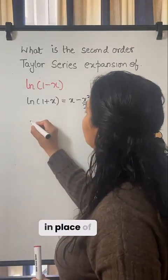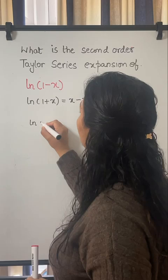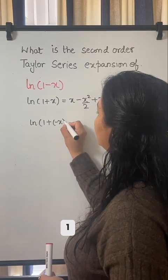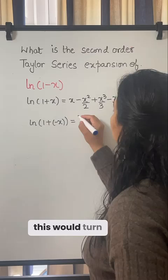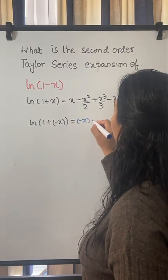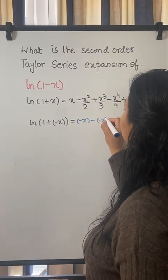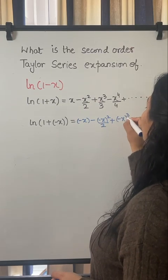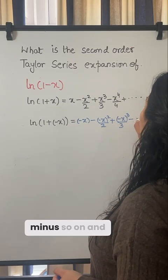Now in case in place of x, I take minus x. So 1 plus minus x. This would turn into minus x minus minus x squared upon 2 plus minus x cubed upon 3 minus so on and so forth.